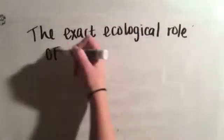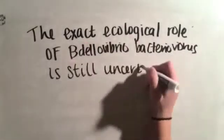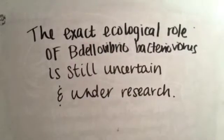The exact ecological role of Bdellovibrio bacteriovorus is still uncertain and under research. However, based on natural selection, it could be assumed that Bdellovibrio bacteriovorus assists in the improvement of species fitness. This is because only individuals who survive and reproduce shall pass on their genetic information. Therefore, individuals who survive from Bdellovibrio bacteriovorus are already better off than other affected individuals.